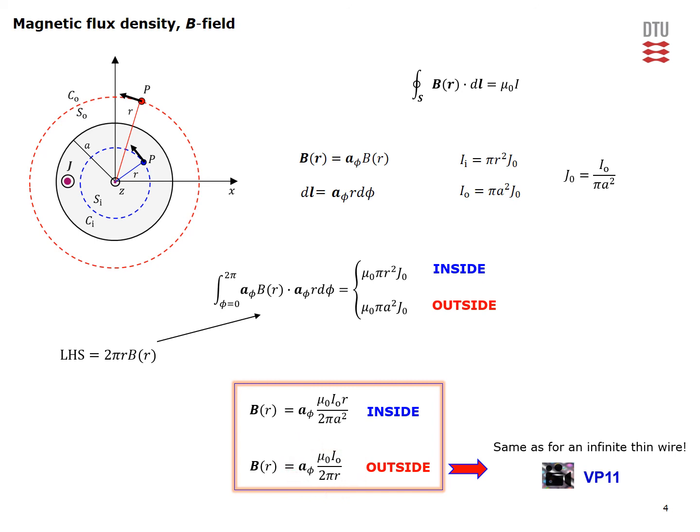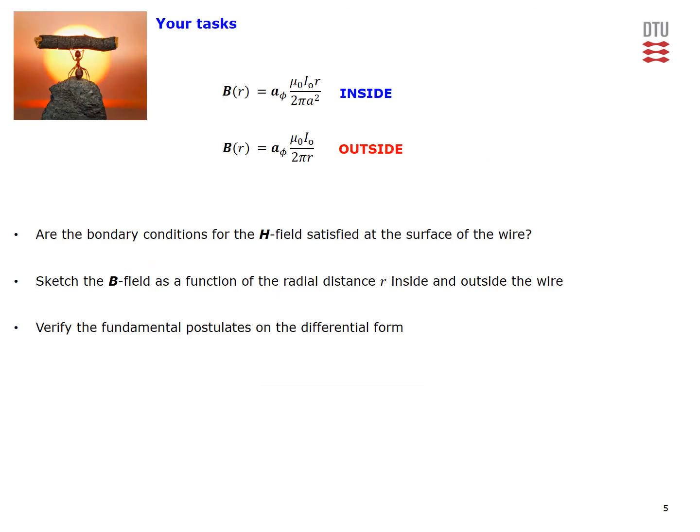The field outside is the same as for an infinite thin wire, as considered in video problem 11. The solution is complete. You can see the field solutions here, and we would like you to verify that the boundary conditions for the H field are satisfied at the surface of the wire, sketch the B field as a function of radial distance r inside and outside the wire, and verify the fundamental postulates in differential form. Thank you very much for your attention.